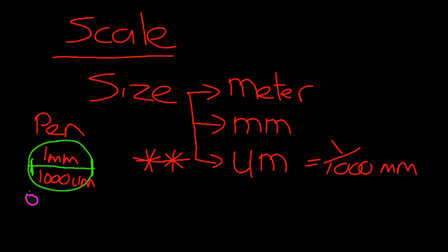If you think in those terms, you can ask: how many red blood cells would fit across the sharp end of a biro? If each red blood cell is about eight micrometres across, and the biro tip is a thousand micrometres, that's roughly ten cells per hundred micrometres, so there must be about a hundred and twenty red blood cells we could line up across the sharp end of a biro.